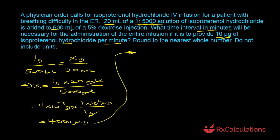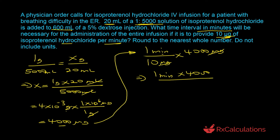Now we find the time using dimension analysis. The mass rate is 10 micrograms per minute, meaning for every minute the patient receives 10 micrograms. We multiply by the total drug amount of 4,000 micrograms; the micrograms cancel out and we are in units of minutes. So: 1 minute × 4,000 ÷ 10 = 400 minutes. The question says round to the nearest whole number — 400 is already a whole number. Do not include units, so the answer is 400.